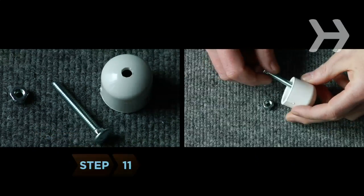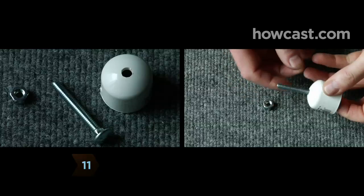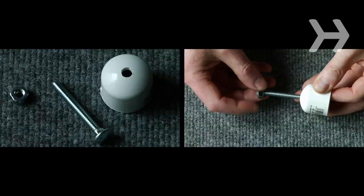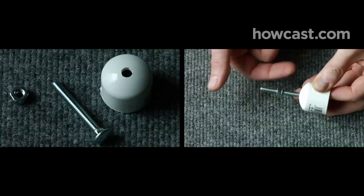Step 11. Thread the carriage bolt through the underside of the cap so it pokes through the top of the cap. Screw the nut down the bolt until it meets the cap, holding the bolt in place.